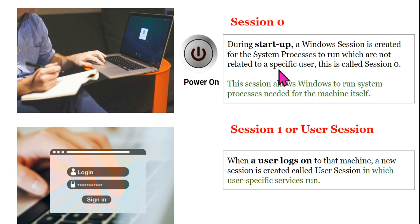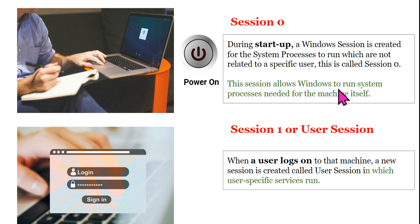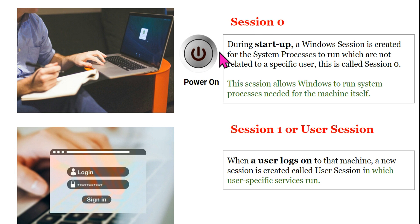During startup, when you power on your PC, a Windows session is created for the system processes to run which are not related to a specific user — this is called session zero. When starting up your PC, it is not specific to any user yet; it runs all kinds of Windows system processes. Only these system processes stay active so that the operating system is on, showing the required user accounts, and all drivers, mouse, and keyboard start working.